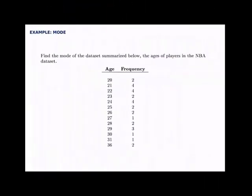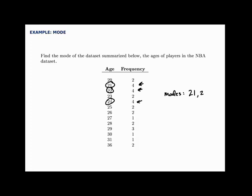Here we'll find the mode of a data set summarized in a frequency table. The mode is the most frequent data value. With a frequency table, just look through the frequencies and find the highest. The highest frequency is 4, and it occurs for three values: 21, 22, and 24. So there are actually three modes: 21, 22, and 24.